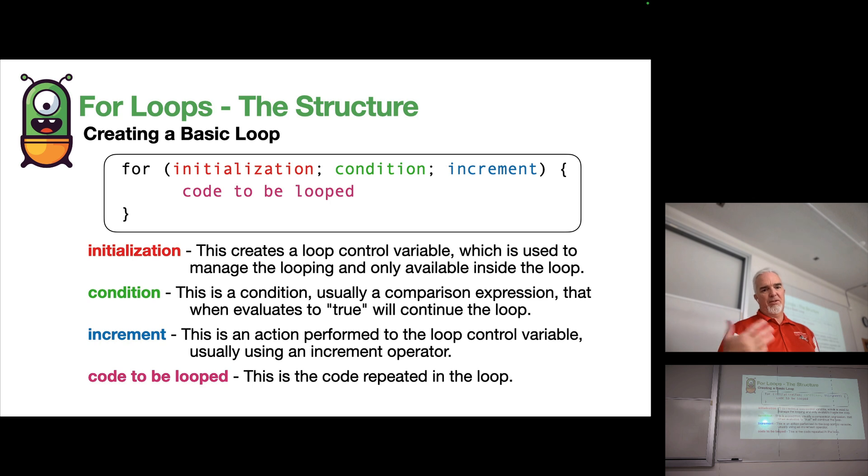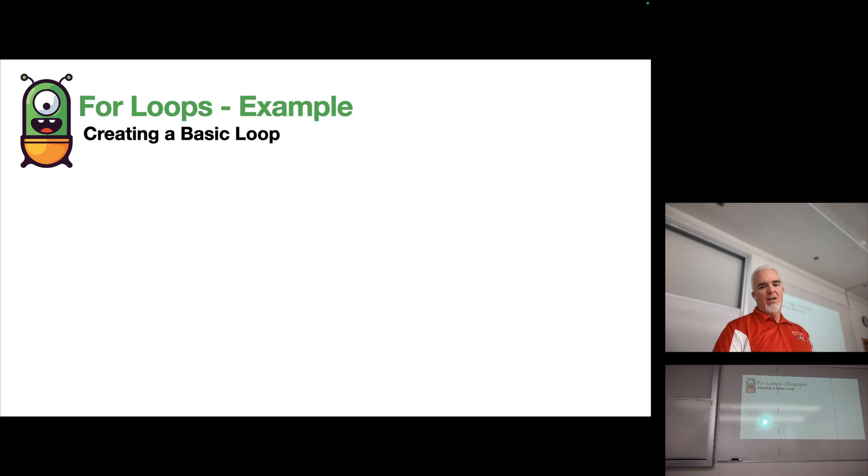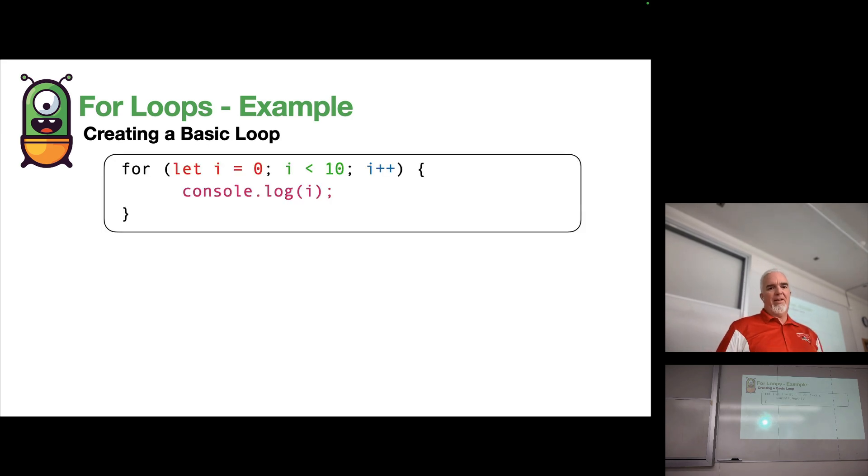The code to be looped is the stuff that's run repeatedly inside the loop. Let's take a look at an example of a for loop that might look like this.